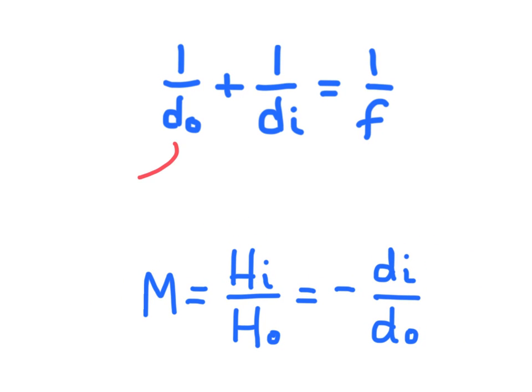And I'll tell you what the different variables mean here. So this is the object distance d_o. This one is the image distance d_i. And this one is the focal length f of the mirror.